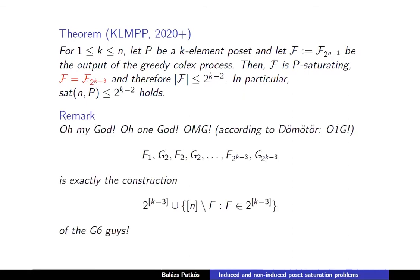The first 2^{k-3} pairs are exactly the construction from the 2013 paper — the chain-saturating family. This construction is saturating for the chain and contains a saturating family for any other k-element poset P.